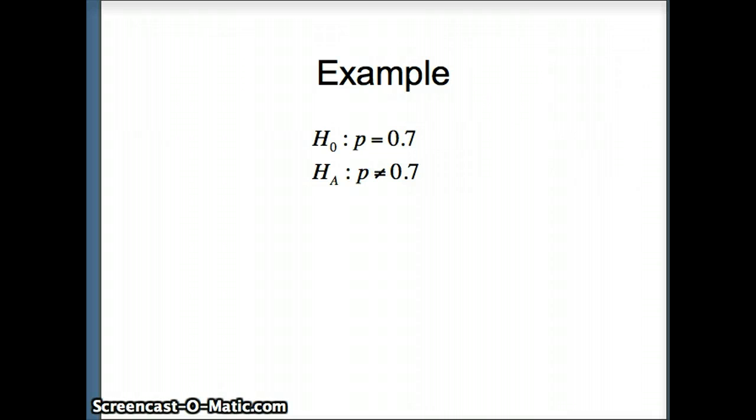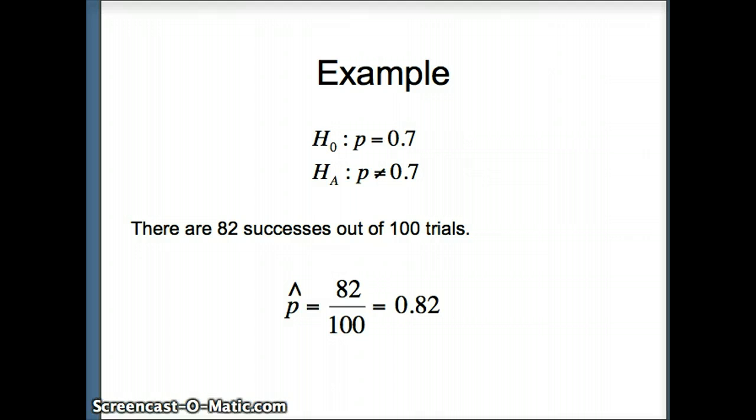So here's another example. This is h-naught p equals 0.7 versus h-a does not equal 0.7. The difference here is this is a two-tail test. So we're going to need to go to the left tail and to the right tail to determine the p-value. So here's our example. We're going to say there are 82 successes out of a total of 100 trials. So our p-hat, which is the number of successes divided by the number of trials, is what we're looking for. And of course, this is reasonable. We have 82 successes and we have 18 failures. Both of those numbers are large. So the normal approximation to the binomial holds. So it's fair for us to use this z-test.